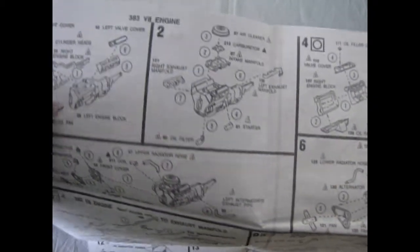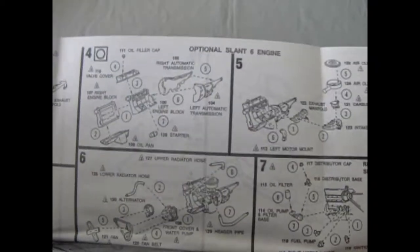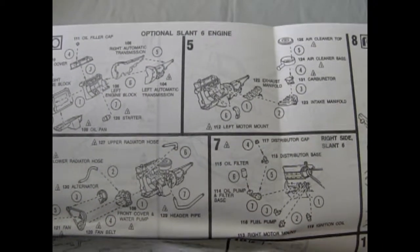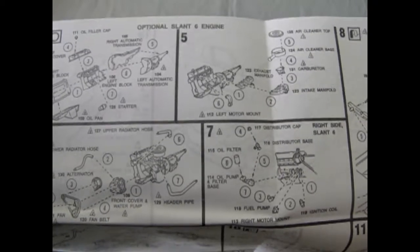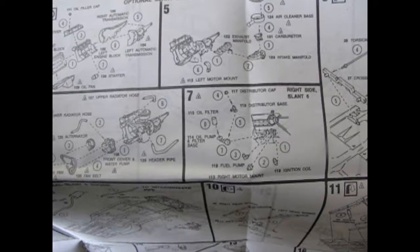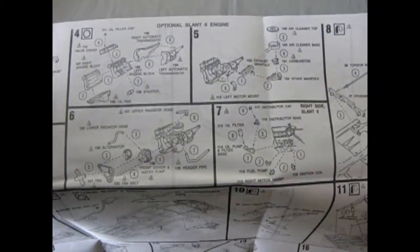That's basically everything. You might as well machine this out of steel at this point. So anyway, you get your 383, and as an option, there's the Slant 6, which is another really cool one. So you've got an extra engine to display. And look at that, there's six panels showing you all the stuff to put together on that Slant 6.